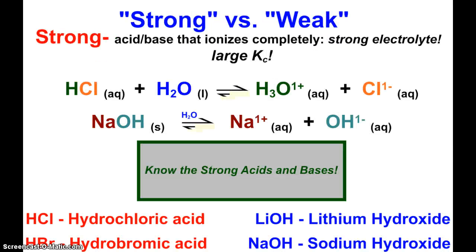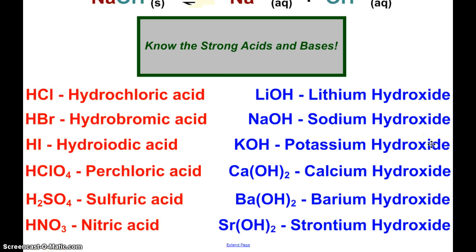Strong versus weak, a strong acid or base ionizes completely. And we talked about those as being strong electrolytes. And now, since we just did equilibrium, these reactions we can see will have a large Kc, a large equilibrium constant. And we are told that we should know our strong acids, the six there, and our strong bases, which are group 1A and 2A metal hydroxides that are soluble. So always remember to keep those in mind.